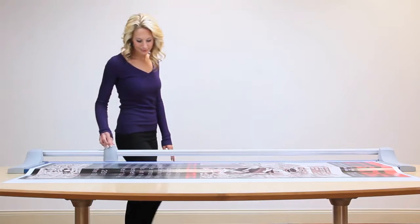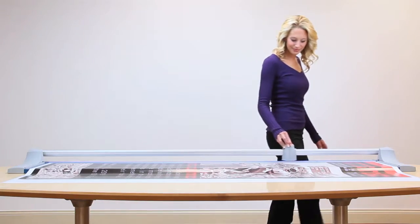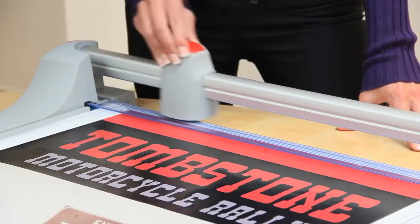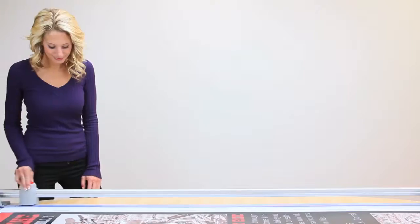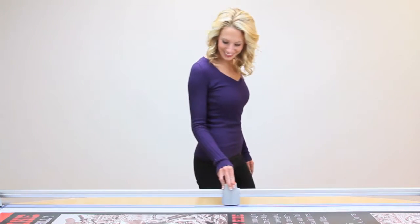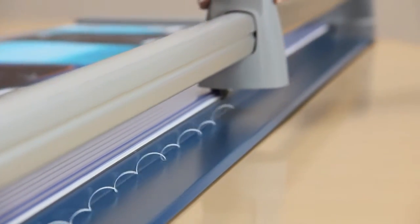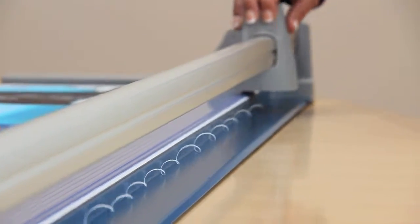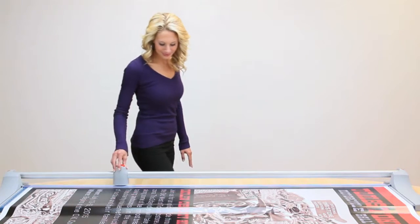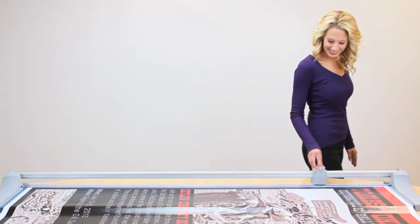Six feet. That's the cutting length of Dahle's 472 Premium Rolling Trimmer. It provides all the benefits you'd expect from our premium series with an optimal 72-inch cutting length, but this isn't your average paper trimmer. It's a German-engineered commercial-grade tool.